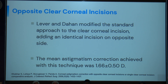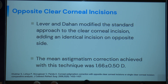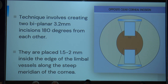Another option is the opposite clear corneal incision, introduced by Lieber and Daan. This approach adds an identical clear corneal incision on the opposite side. Though mainly used in phacoemulsification, it can also be applied in SICS. The technique involves creating two biplanar 3.2 mm incisions 180 degrees from each other, placed 1.5 to 2 mm inside the edge of limbal vessels along the steeper meridian of the cornea.